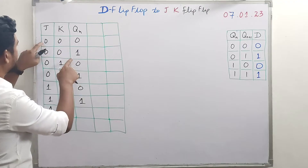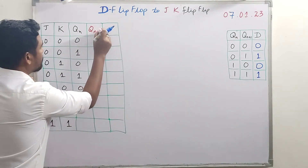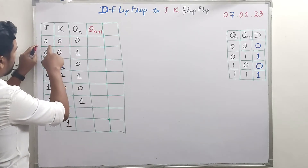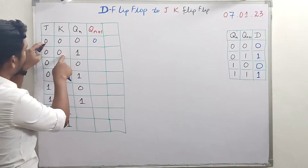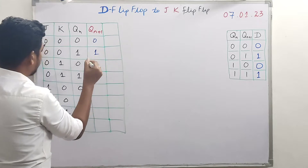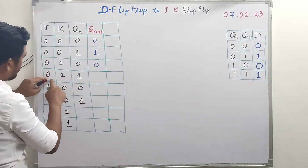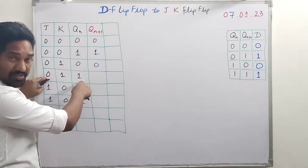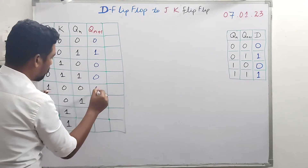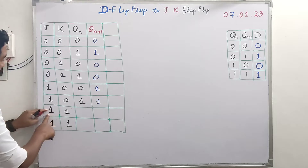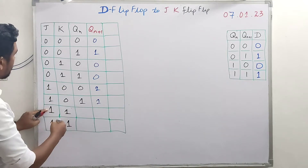The truth table of a JK flip-flop shows the present state QN and next state QN+1. When J=0, K=0, there is no change: if present state is 0, next state is 0; if present state is 1, next state is 1. This is the no-change condition, similar to the SR flip-flop. When J=0, K=1: present state 0 gives next state 0; present state 1 gives next state 0.